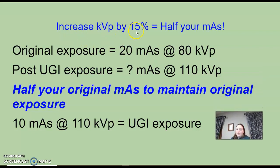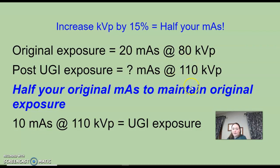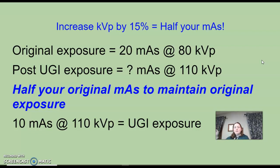So if we've increased our KVP by 15%, we have to half our mAs so we don't double expose. We have to increase our KVP from 80 to 110 — this is an increase by at least 15%. So to make sure we're not doubling our exposure, we're going to cut our mAs in half. Instead of using 20, we're going to use 10. So instead of 20 mAs at 80, we'll use 10 mAs at 110 for the AP stomach with barium for the upper GI.